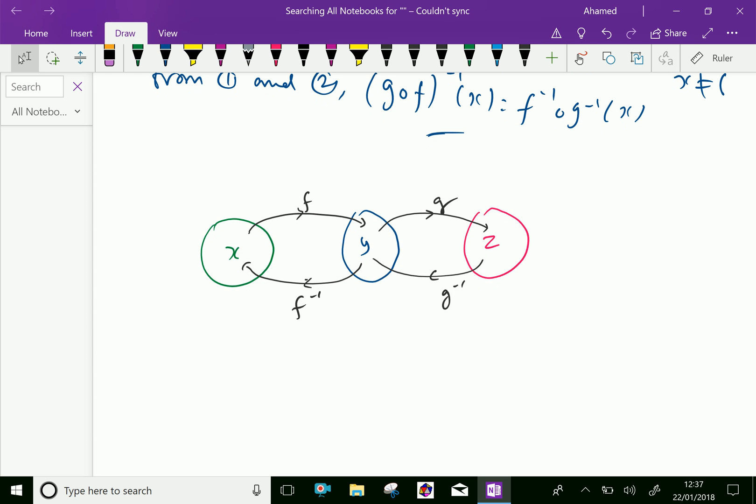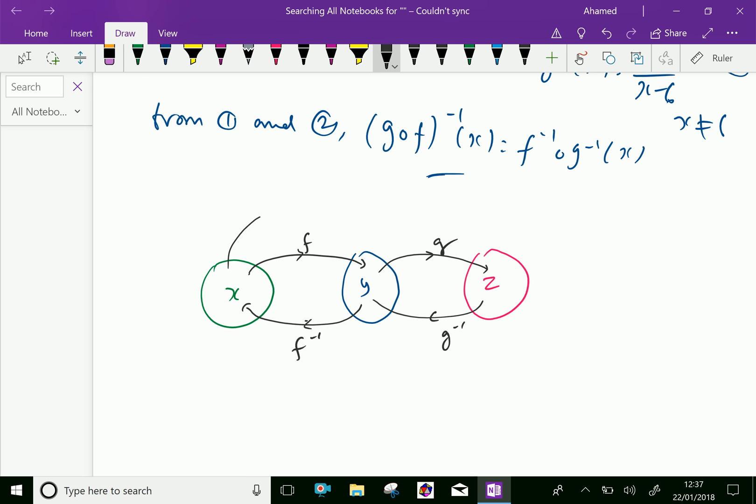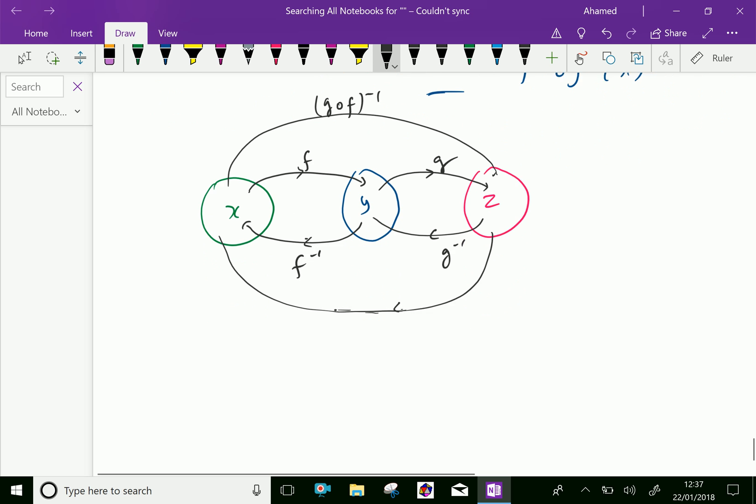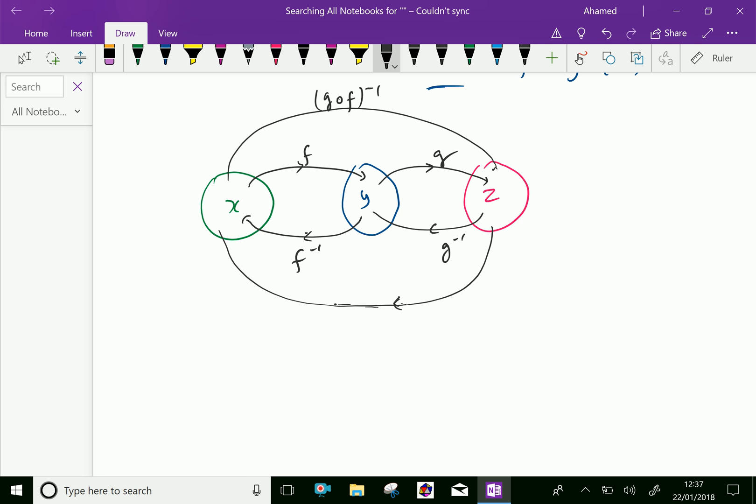Then here, x to z is g of f inverse, and z to x is f inverse of g inverse x, g inverse only.